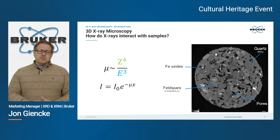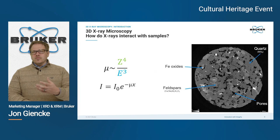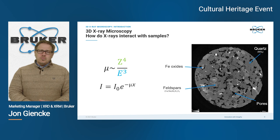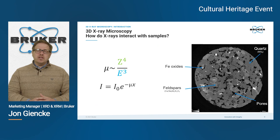Meanwhile, anything with very low x-ray absorption — such as air around a rock or inside pores — appears dark or black. Anything intermediate, such as feldspars and quartz, will have a grayscale value corresponding to its attenuation coefficient distribution.